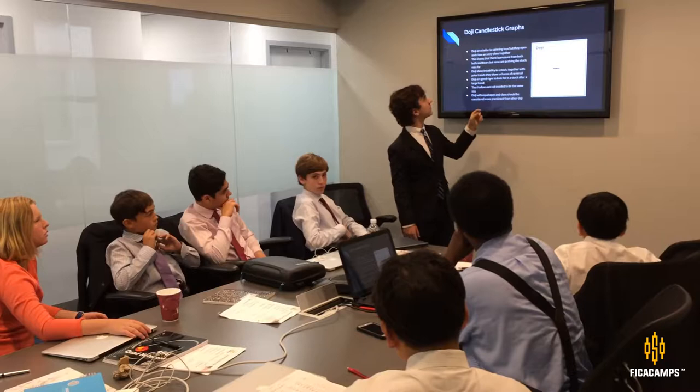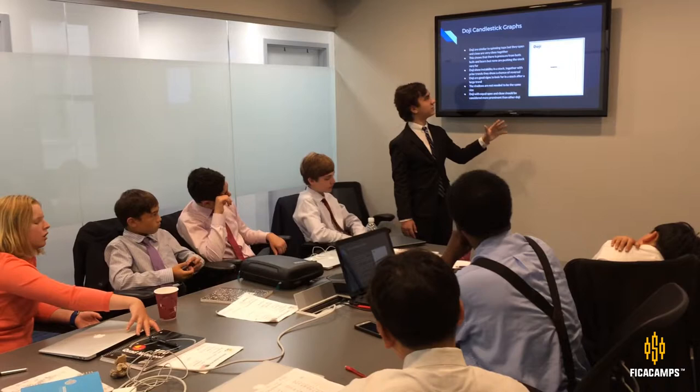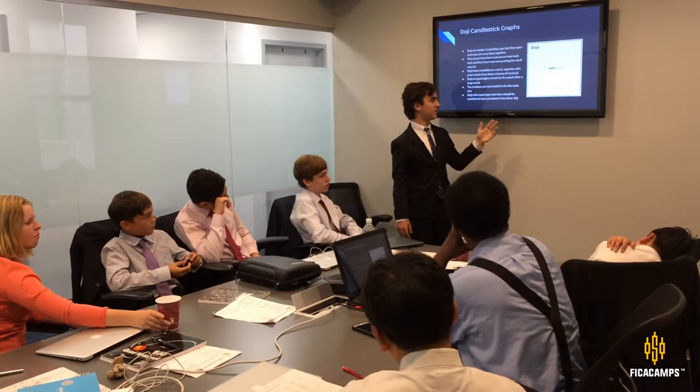Doji are like spinning tops, but they have even smaller real bodies — sometimes the open and close are exactly the same. They are really hallmarks of instability. So if you see a doji after a long advance or long downtrend, you can safely say that there might be a reversal. It's not definite, but it's a strong signal.